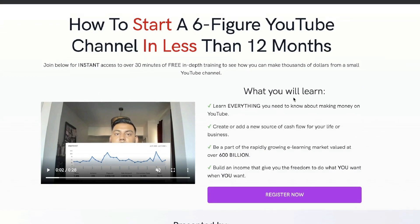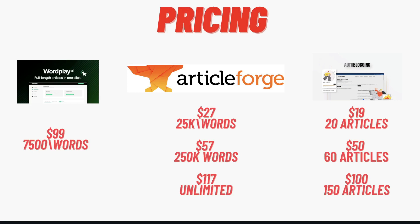It's difficult to say which one of these tools outright has a better pricing structure than the other because they're all a little bit different. Wordplay has a lifetime deal, so you pay one time and you get those words per month. Autoblogging.ai doesn't do it by words — their packages are priced by the number of articles you can generate. Overall, I'm leaning more towards autoblogging.ai in terms of pricing. I really like that you're able to get five free credits so you can try out the AI without limitations, and if you like the content, you can upgrade to a monthly plan.